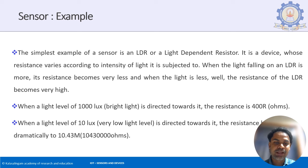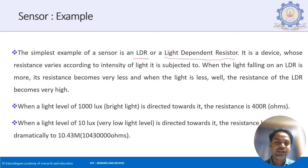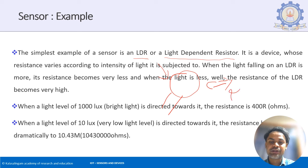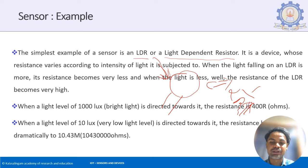A simple example of a sensor is the light-dependent resistor. LDR is based on the concept of photons falling on the sensor. When photons fall, conductivity increases, and since conductivity is inversely proportional to resistance, when photons fall on the LDR, the resistance decreases.